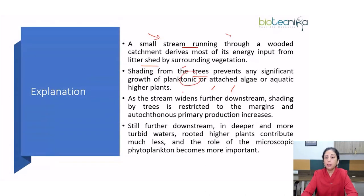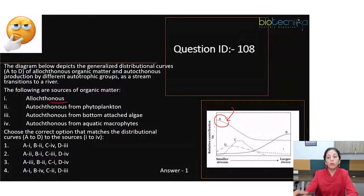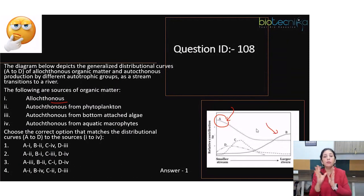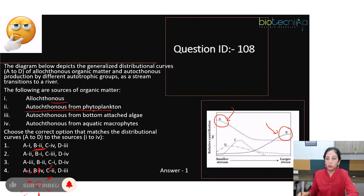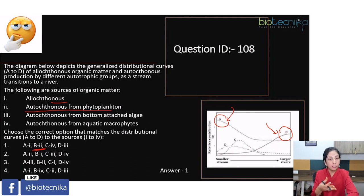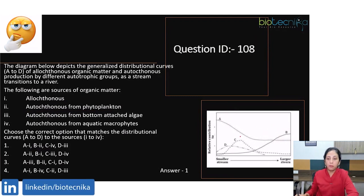It is only when moving towards larger rivers that phytoplankton growth becomes possible, because the shading plants surrounding the water body move to the far edges as the water body gets wider. This explains curve B, which has been matched with autochthonous from phytoplankton. As we move from a small stream toward a larger river, phytoplankton gets a chance to grow, producing that distinctive curve shape, while curve A (allochthonous) reflects that organic matter is primarily derived from external sources in smaller streams.